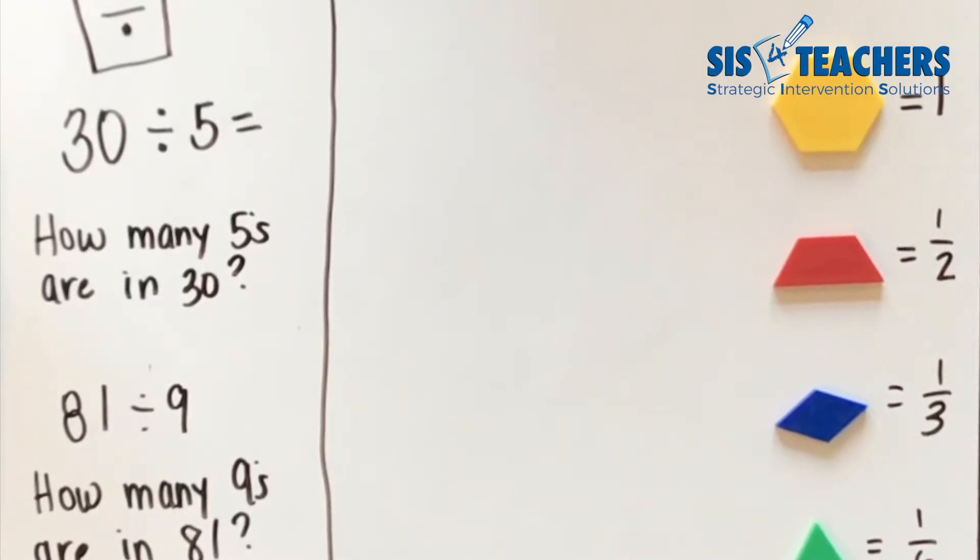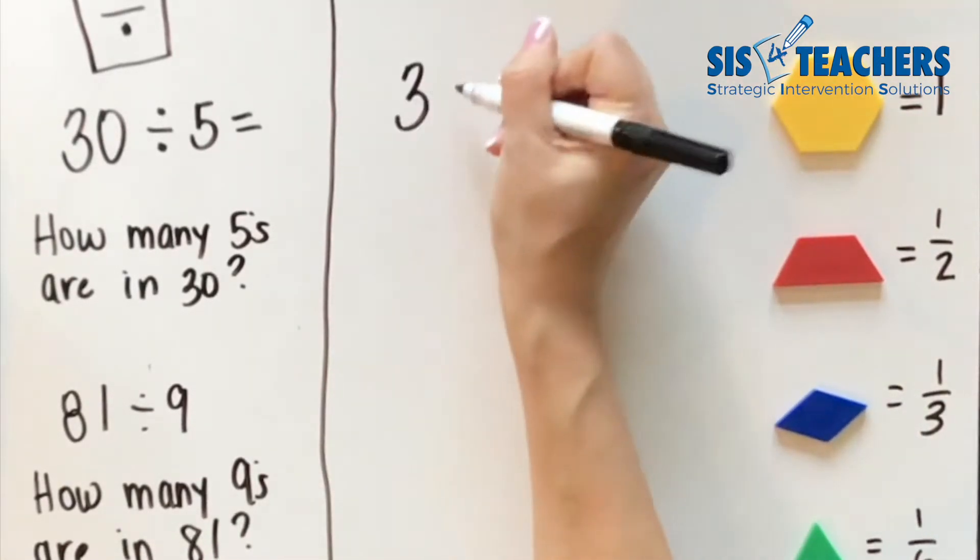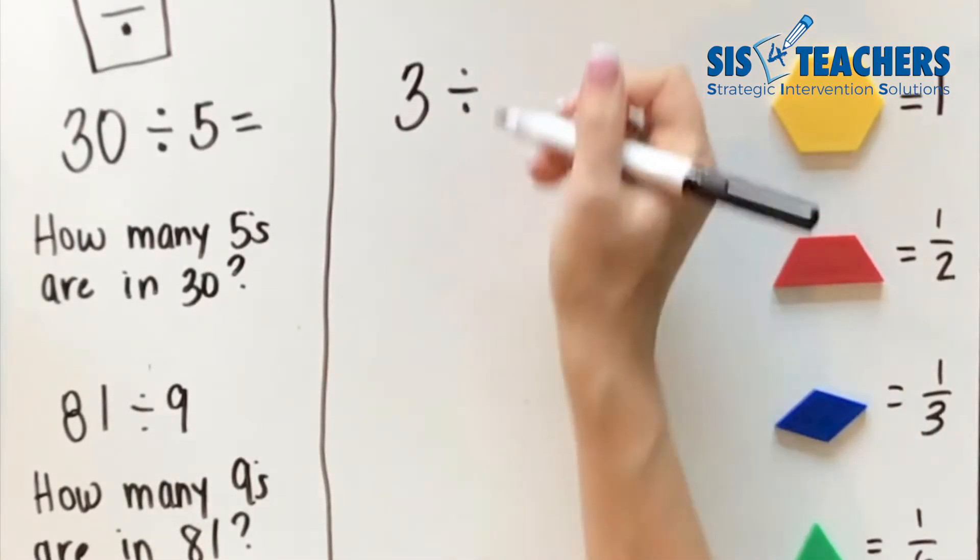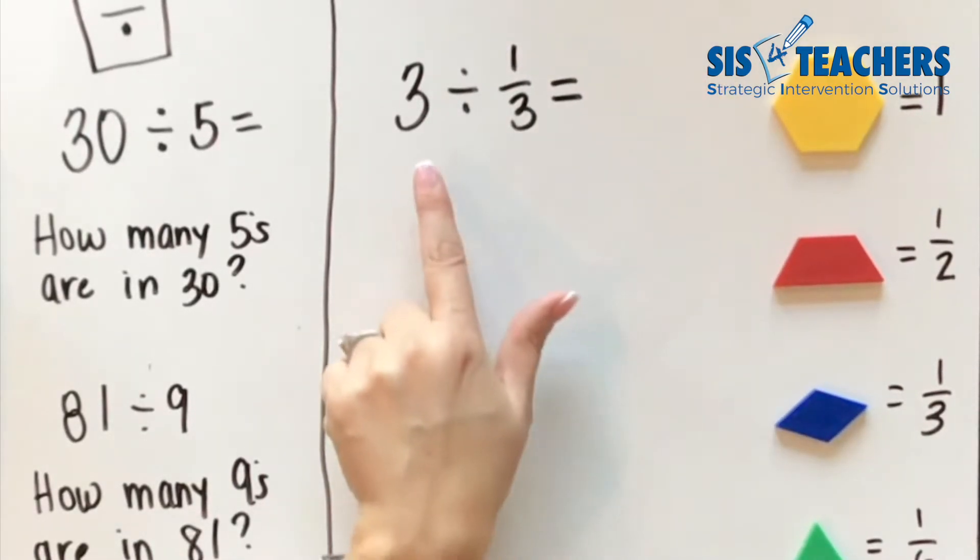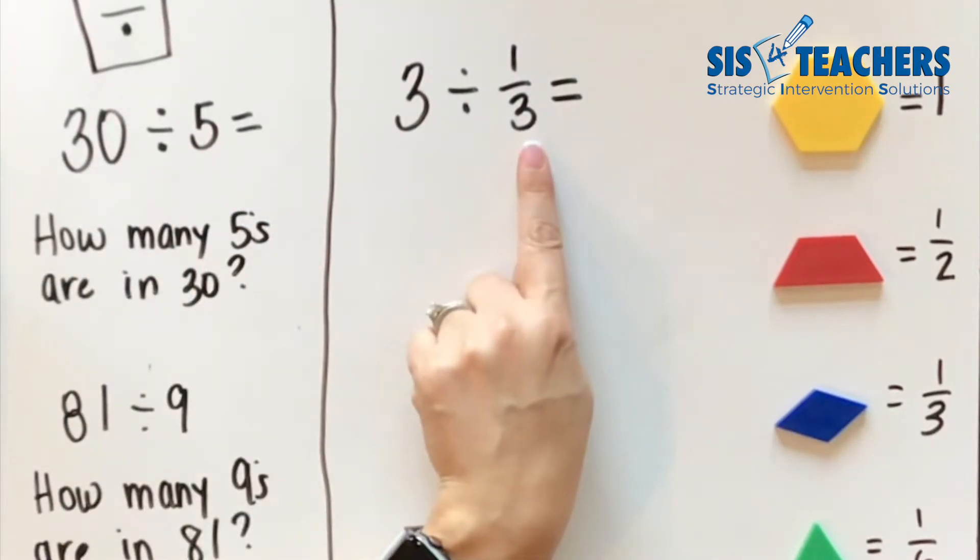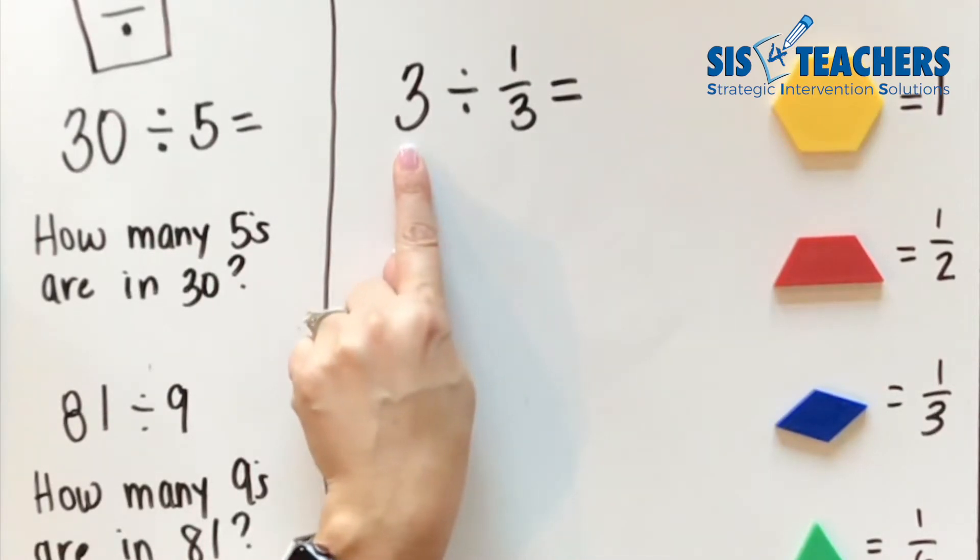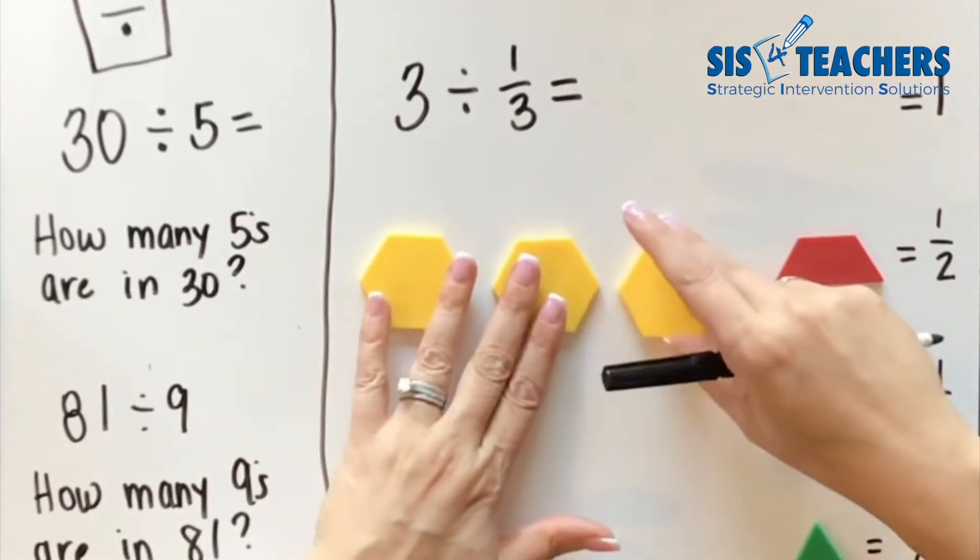It's important first to start off with looking at a whole number divided by something. So if I wrote this statement out, it says three divided by one third. But if I thought about it in this way, it's really asking how many one thirds are there in three? So in this case, we're going to use all the hexagons that I have to show our three whole.